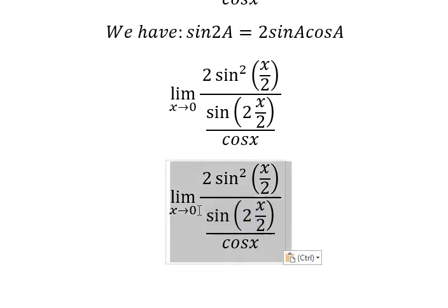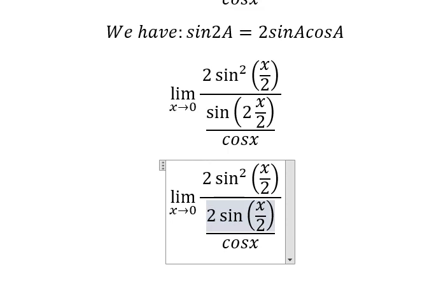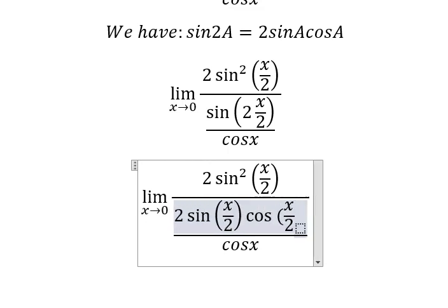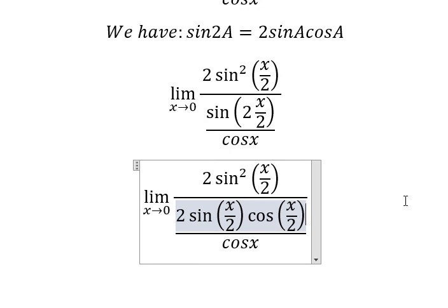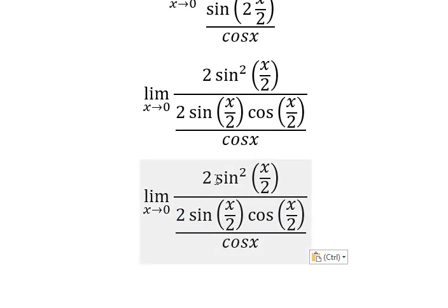And this one, that is about 2sin(x/2) cos(x/2). Next we need to simplify 2sin(x/2) on numerator and denominator.